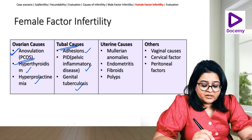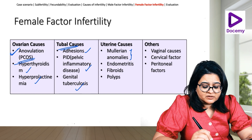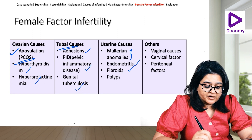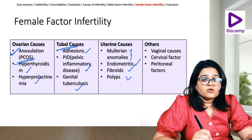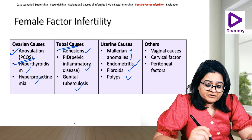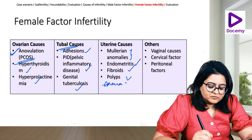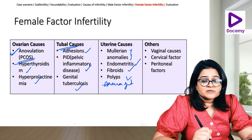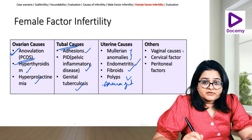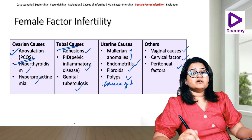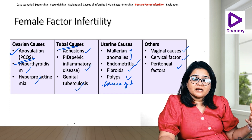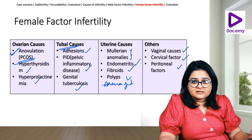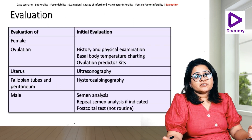Uterine causes include Müllerian anomalies, endometritis, fibroids, and polyps — specifically submucosal fibroids, endometrial polyps, uterine septa, and Asherman's syndrome (intrauterine synechiae or adhesions within the uterine cavity). Other causes include vaginal and cervical causes such as vaginismus, dyspareunia, anti-sperm antibodies in the cervix, and peritoneal factors — all causes of female sub-fertility.